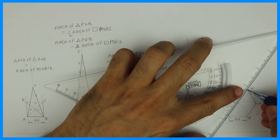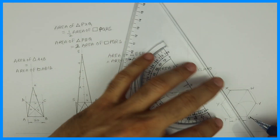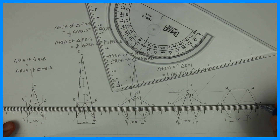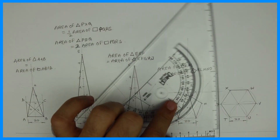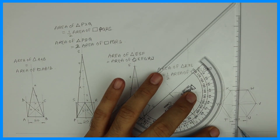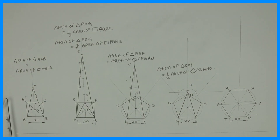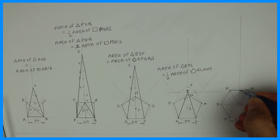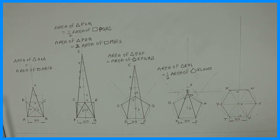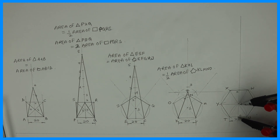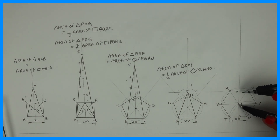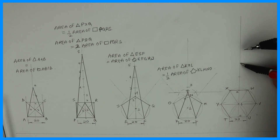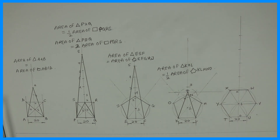Then we have hexagon. Hexagon is made up of how many triangles? Six triangles. So we'll take the height six times. This is the triangle height — O to one. We'll take it six times: O to one, one to two, two to three, three to four, four to five, five to six.